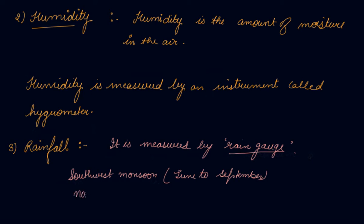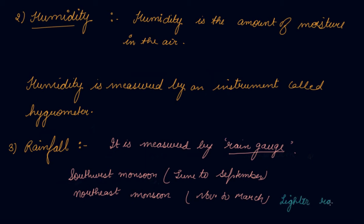The second is the northeast monsoon, from November to March, which brings relatively lighter rain. During the northeast monsoon, we generally have lighter rains, whereas the southwest monsoon brings very heavy rains to the southern and western regions.